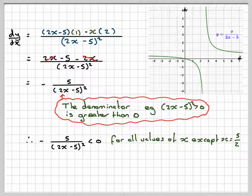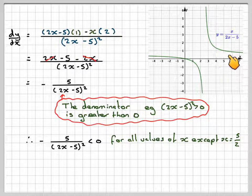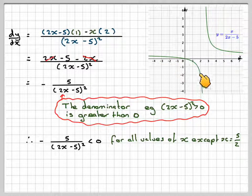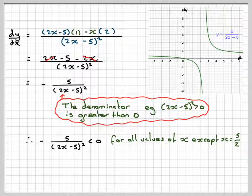And going back to the graph, we can see that the gradient of this graph is always negative. That means the function is decreasing over all values of x except 5 over 2. I hope you've understood and I thank you very much for watching.